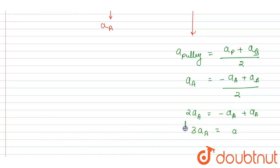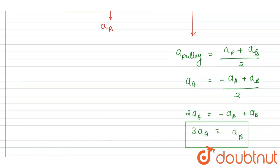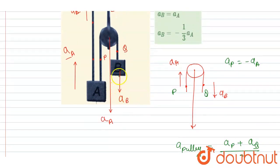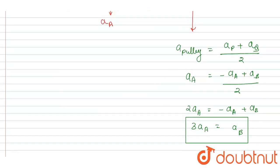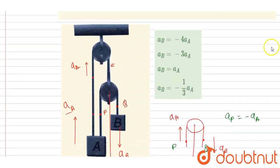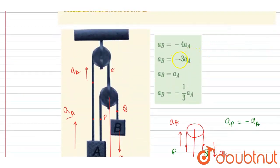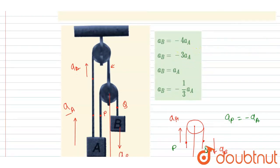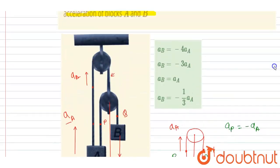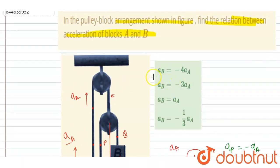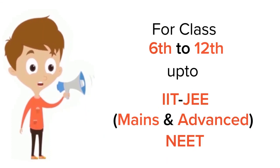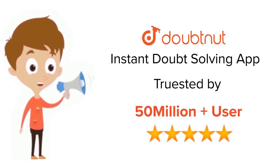Three times the acceleration of block A equals the acceleration of block B. Since the acceleration of B is in the downward direction and the acceleration of A is in the upward direction, both accelerations are in opposite directions. So we write a negative sign: aB = -3aA. This is the correct option — option B is correct. Thank you. For class 6 to 12, IIT JEE, and NEET level, trusted by more than five crore students — download the DoubtNet app today.